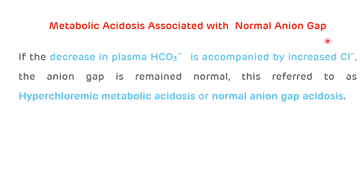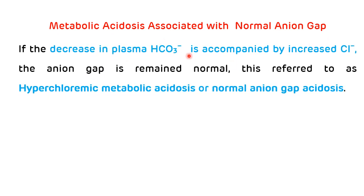The second type is metabolic acidosis associated with normal anion gap. If the decrease in plasma bicarbonate is accompanied by increased chloride, the anion gap remains normal. Therefore, it is referred to as hyperchloremic metabolic acidosis — as there is an increase in the chloride value — or normal anion gap acidosis.